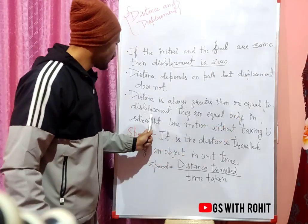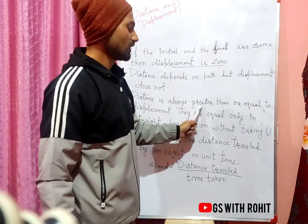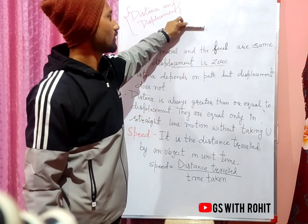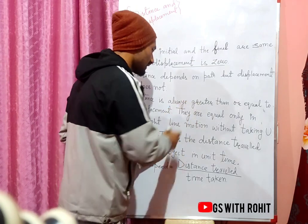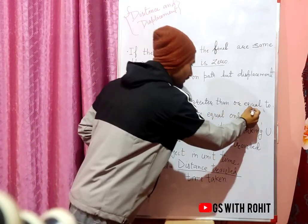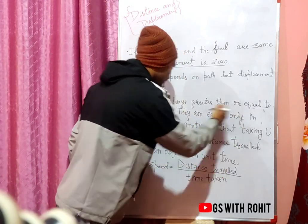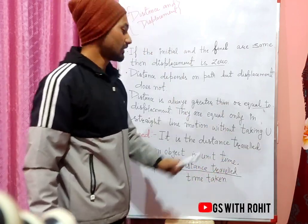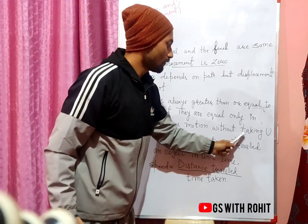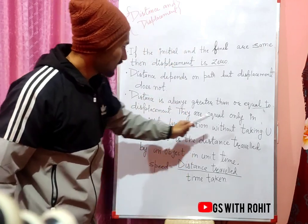Distance is always greater than or equal to displacement. Distance is greater than displacement when the object has traveled along the actual path. Displacement is the shorter distance by definition. Distance is equal to displacement only in straight-line motion without taking any turns.